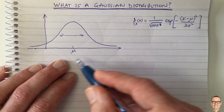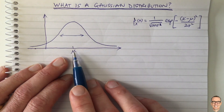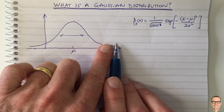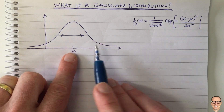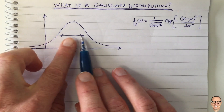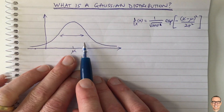So these are the two parameters which change the shape of this bell. If you change mu you can move it up and down, and if you change sigma you can make it wider or narrower.